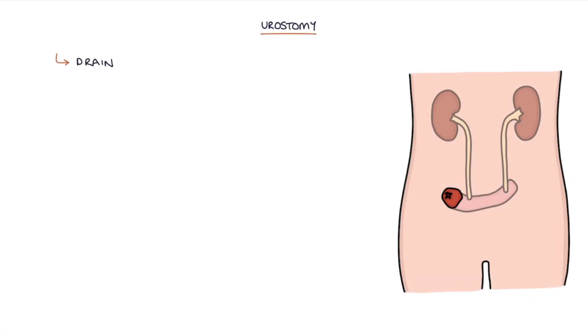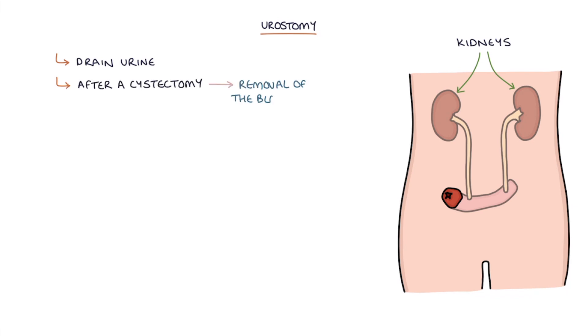A urostomy is used to drain urine from the kidney, bypassing the ureters, the bladder and the urethra. This may be used after a cystectomy, which is removal of the bladder. Forming a urostomy involves creating an ileal conduit. Let's talk in more detail about how an ileal conduit is created.